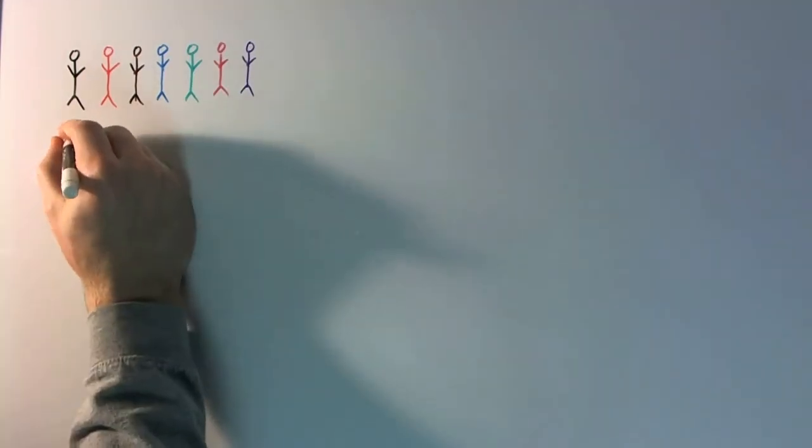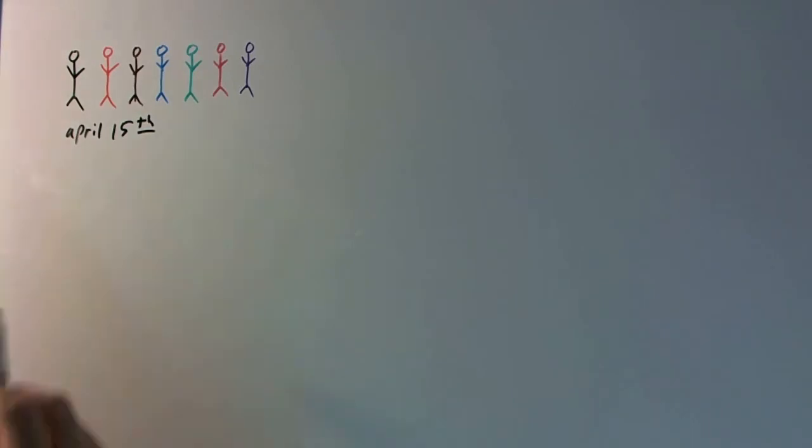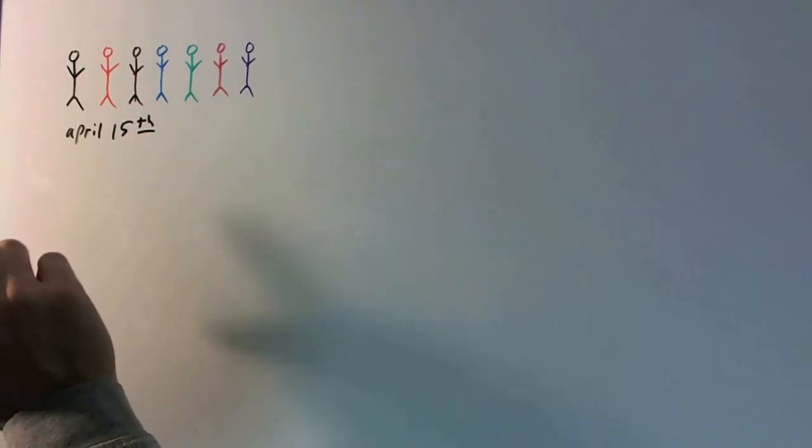So this guy, this first guy here, has a birthday on April 15th. So what's the probability that, say, this pink guy right here also has a birthday on April 15th, or the brown guy, or the blue guy, or the green guy, etc.? So what's that probability? Well, let's talk it out for a second.